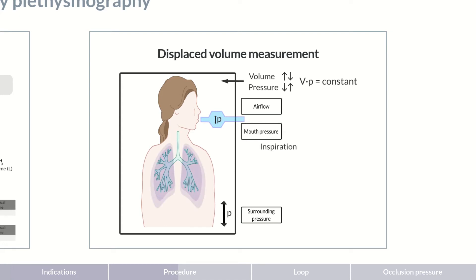During inspiration, the volume of the lungs, and therefore the thorax, increases. The body, shown here as lungs for simplicity's sake, occupies more space in the chamber. As a result, the volume of surrounding air in the chamber decreases by the same amount through which the volume of the thorax increases. The surrounding air is compressed and cabin pressure increases.